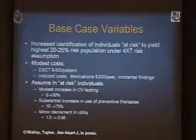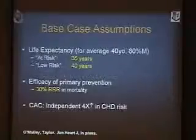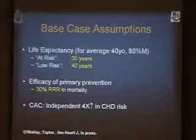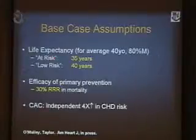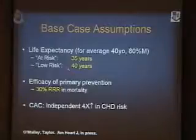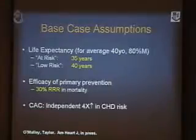There would be a substantial increase in use of preventive therapies — perhaps from 10% in people not identified as at-risk, to upwards of three-quarters of the population treated appropriately with risk-reducing medications. And there would be only a minor decrement in utility, down to about 98% — remember, hypertension is 94% — so we felt those were fairly favorable assumptions. Other assumptions include life expectancy. When you diagnose someone at age 40, anything you do is going to have an effect across life expectancy. An at-risk population might have a slight decrement in longevity of approximately five years over a low-risk population. The efficacy of primary prevention would be about a 30% relative risk reduction for mortality, and there would be a four-fold independent increased risk associated with coronary calcium.